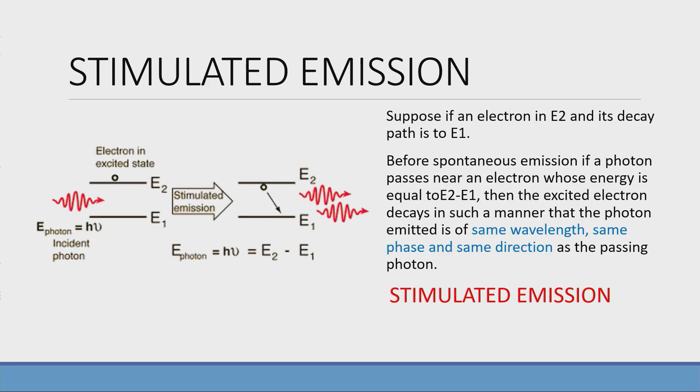For laser, we need stimulated emission. So what is it? An electron is in the excited state E2 and it has to decay to E1. Before the emission, if a photon passes by this electron, whose energy is equal to E2 minus E1,